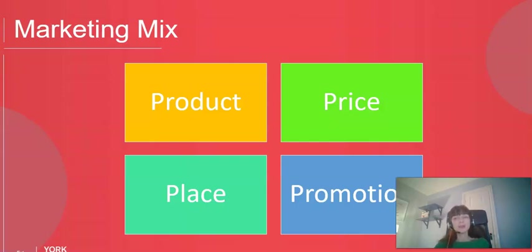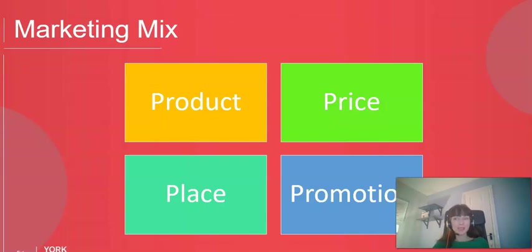Now we've thought about global strategy, we're going to move on to the marketing mix — the elements we need to get right to position what we do in our customers' minds. There are four aspects: the product — what we're selling; the price — how much we're selling it for, going back to the marketing exchange; the place — distribution, how and when we're getting it to customers; and promotion, also known as marketing communications.